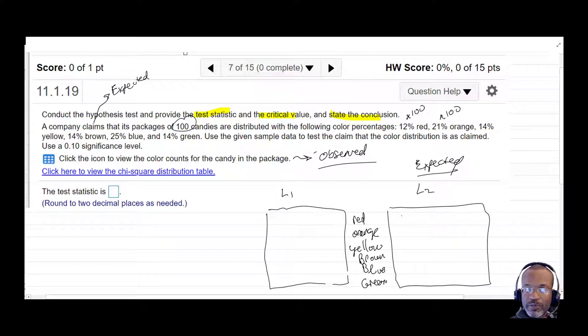So what is expected given those percentages? What's expected will be for red, we're expecting 12 out of the 100. Orange, we're expecting 21, because 21% times the total count, 21% times 100. And similarly for yellow, we're just multiplying the percentages by the total count. Blue, 25, and green would be 14.